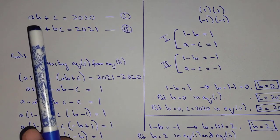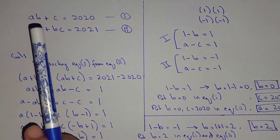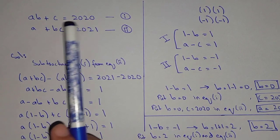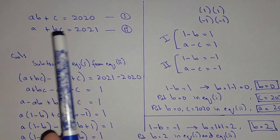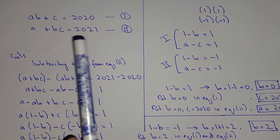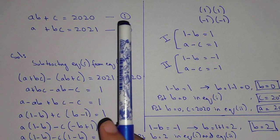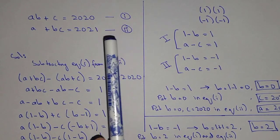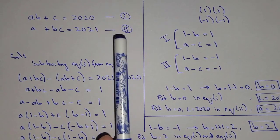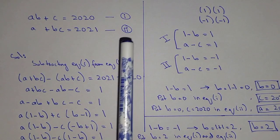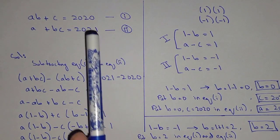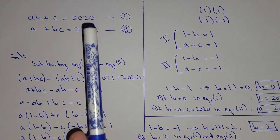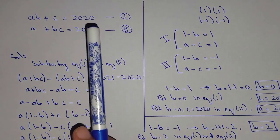Here we have AB plus C equal to 2020, and A plus BC equal to 2021. This is equation 1 and this is equation 2. There is a difference of just 1 between 2021 and 2020.